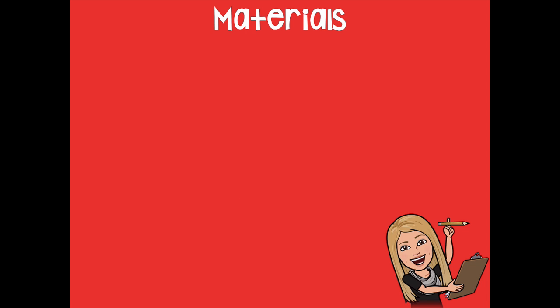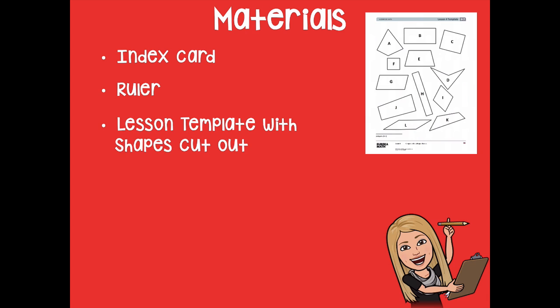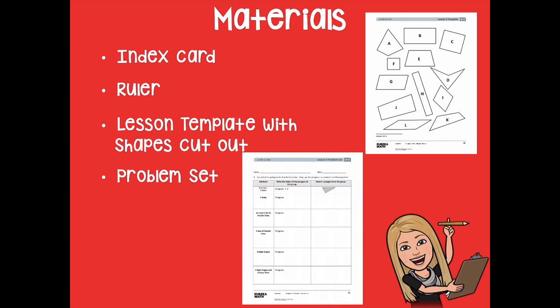The materials you'll need for this lesson are an index card. If you don't have an index card, you can use a sticky note or the corner of a piece of notebook paper — just something that has a straight corner that's not ripped. You'll also need a ruler, your lesson template with the shapes cut out (having them cut out beforehand will be much faster), and your problem set, because we're actually going to work on that together during this lesson. Make sure you grab all those materials before you get started.